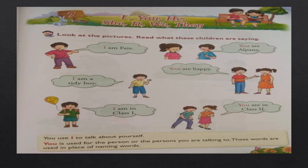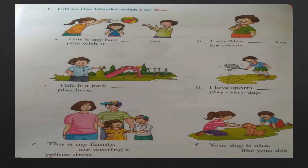Turn the page. Fill in the blanks with I or you. This is my ball. You can play with it. I am Alan. I love ice cream. This is my family. This is a park. I play here. I love sports. I play every day. This is my family. You are wearing a yellow dress. Your dog is nice. I like your dog.